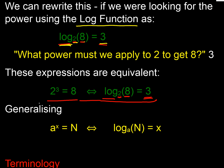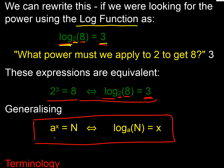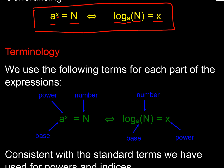We can generalise that into a general form: if we've got our base number a, raised to the power x, and we get the value n, then we can reverse that and say what power must we raise the base number a to, to get n — the answer is x. In terms of terminology, the little number up top is the power, the number being powered up is the base (a), and the resultant is the number (n). Repositioning those into log format: the base is the little a, the number is n, and x coming out is the power.